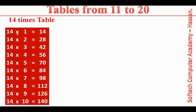14 times table. 14 ones are 14. 14 twos are 28. 14 threes are 42. 14 fours are 56. 14 fives are 70. 14 sixes are 84. 14 sevens are 98. 14 eights are 112. 14 nines are 126. 14 tens are 140.